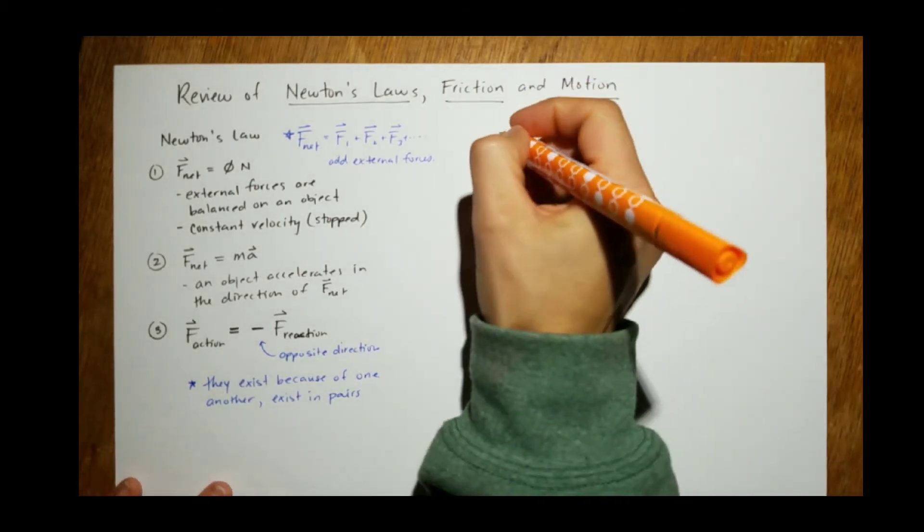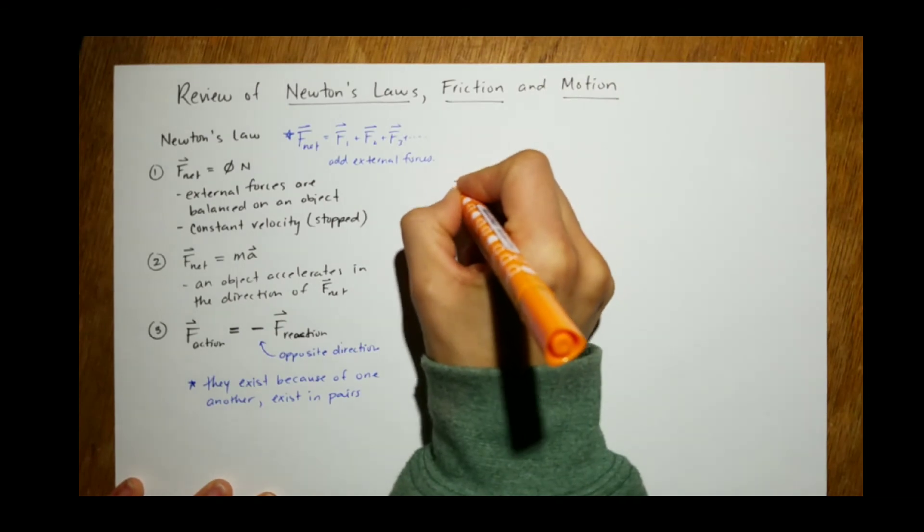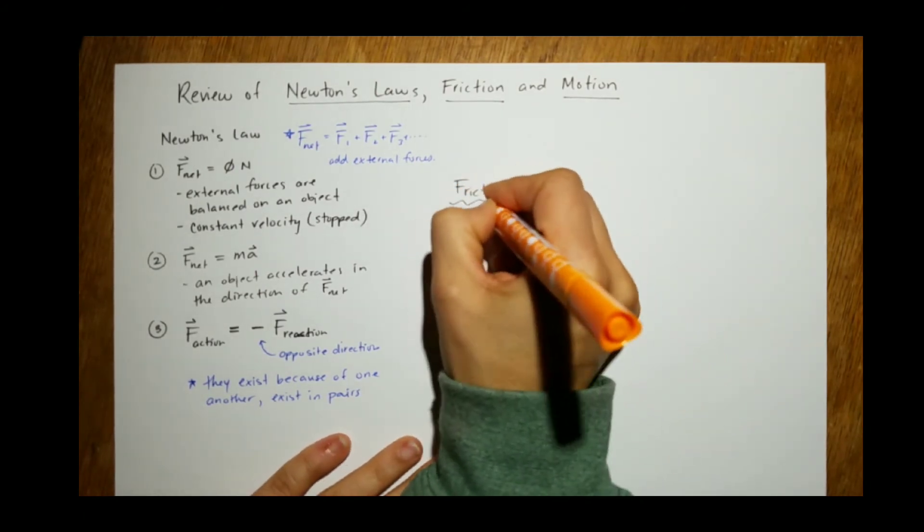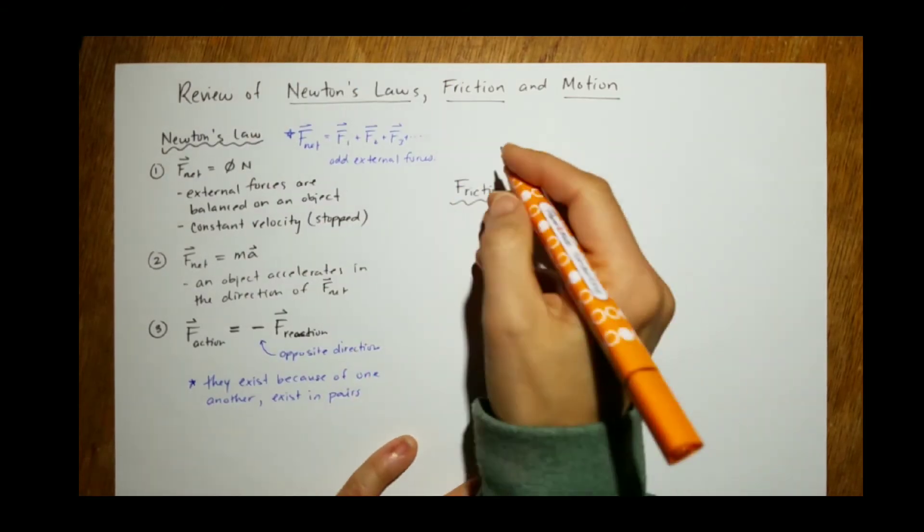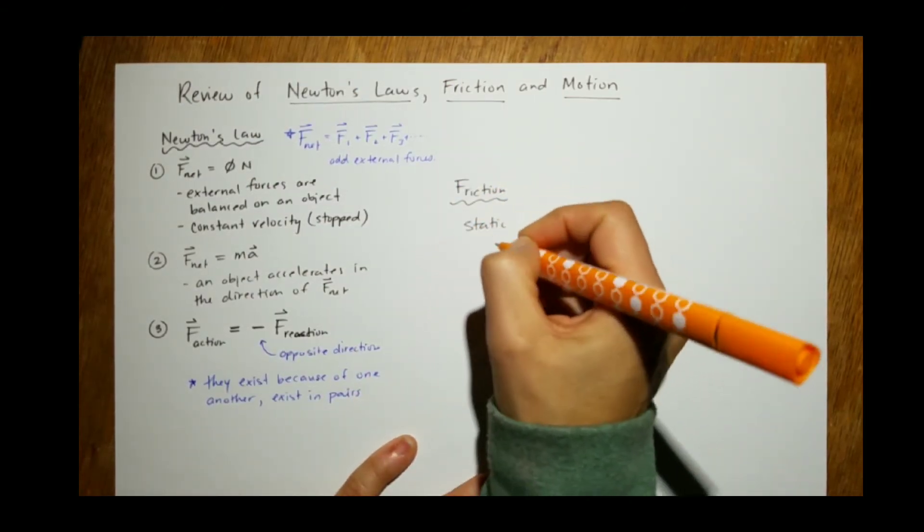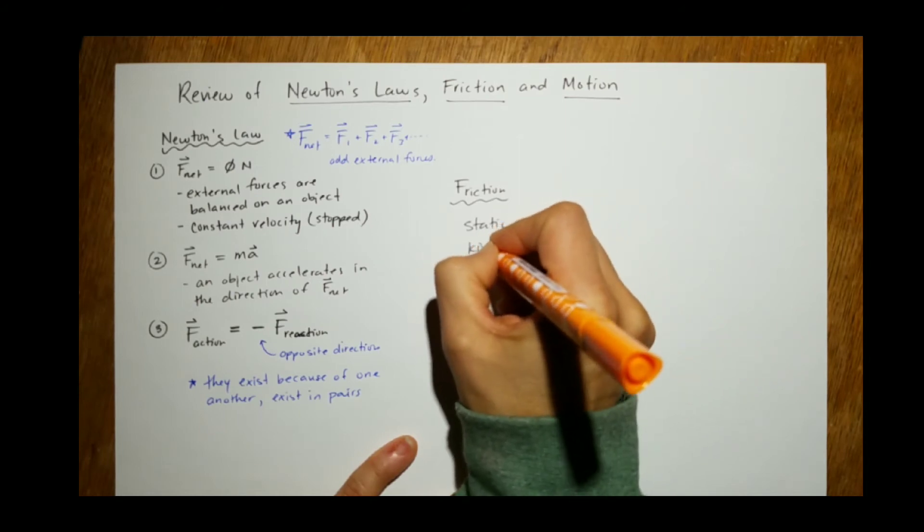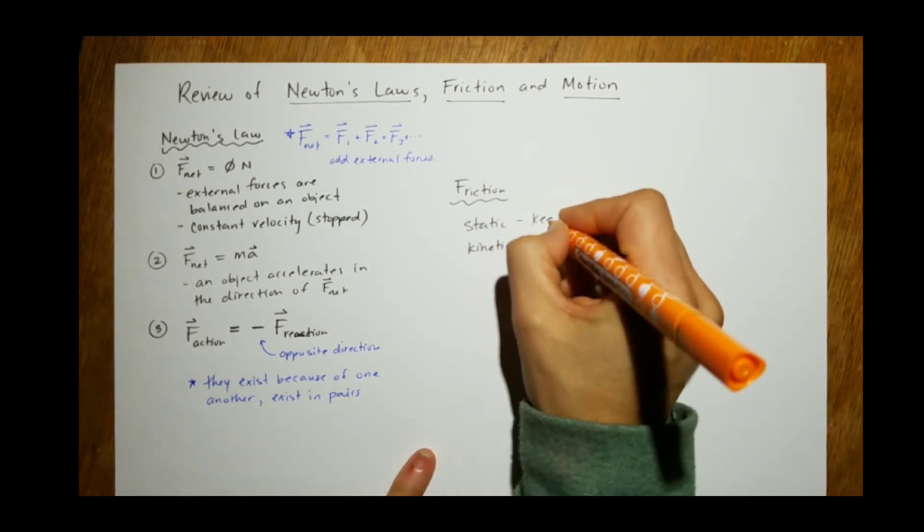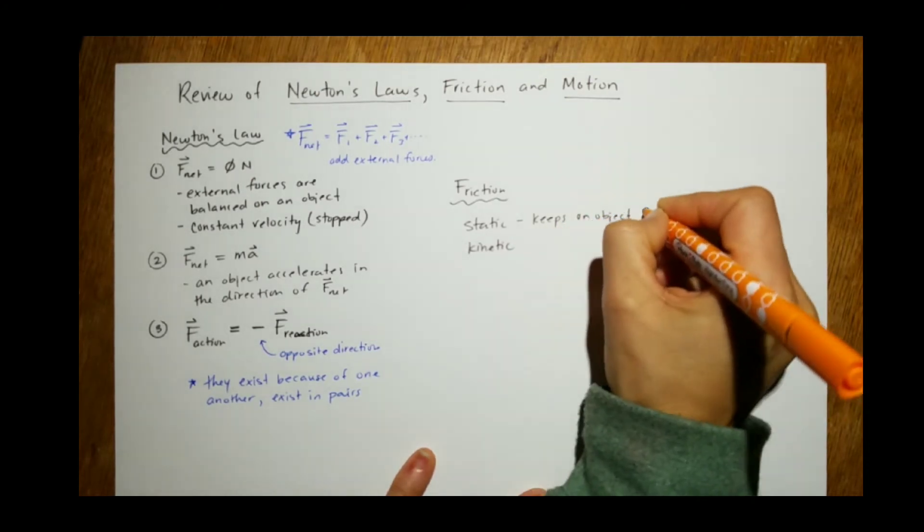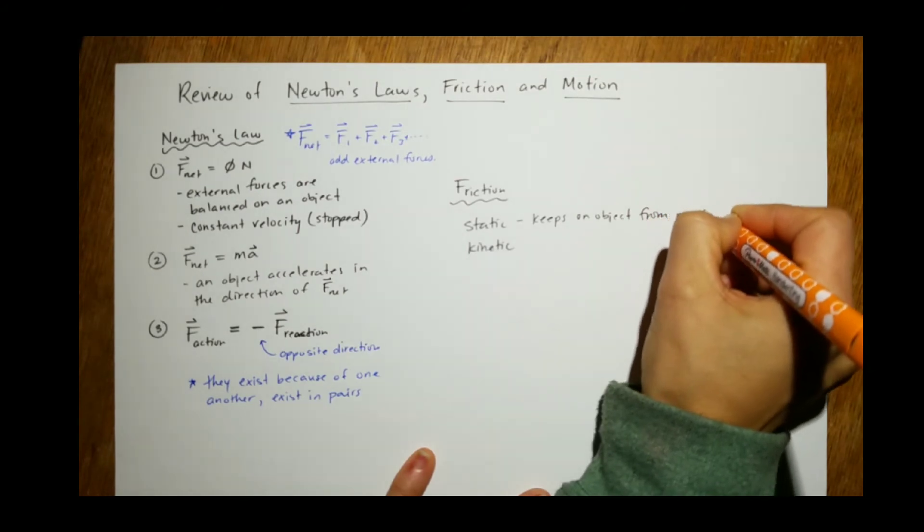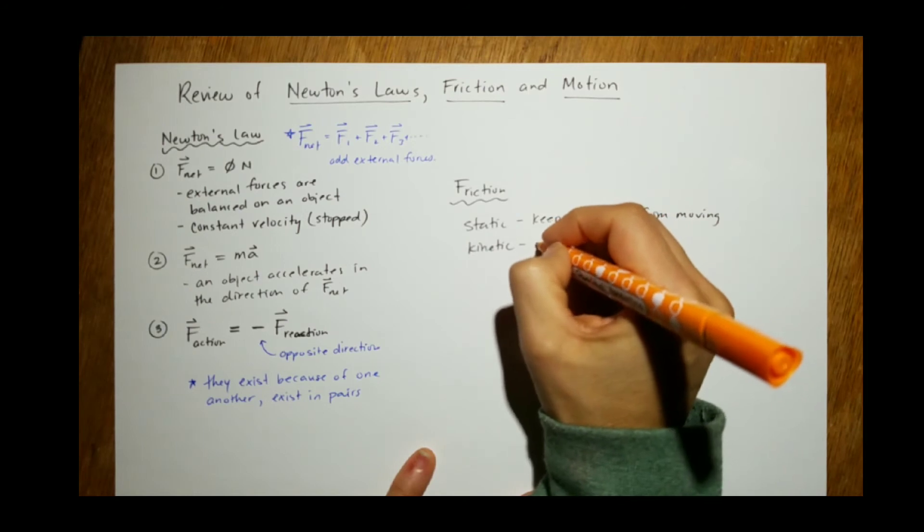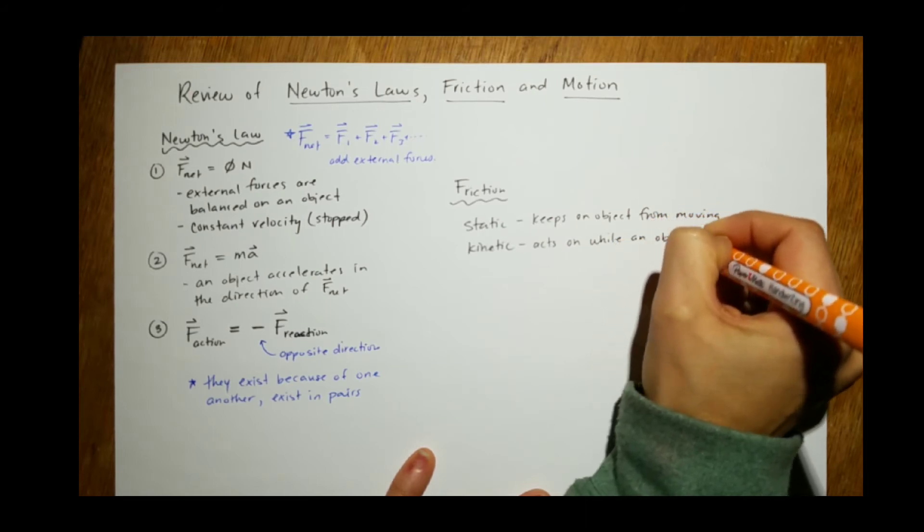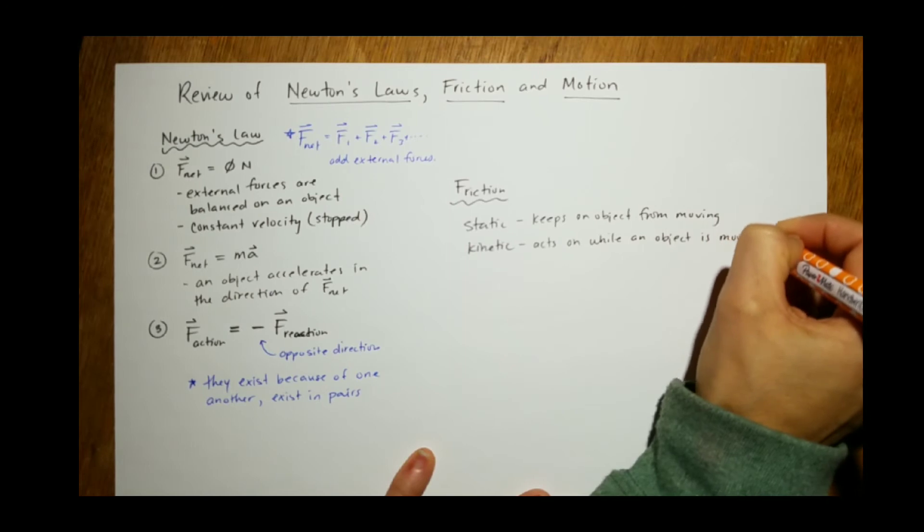Now, we have friction. There's two types of friction. There's static and there is kinetic friction. Static keeps an object from moving. And kinetic acts on it while an object is moving.